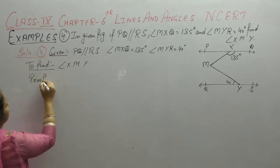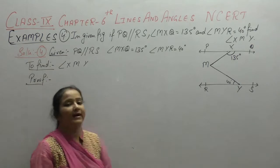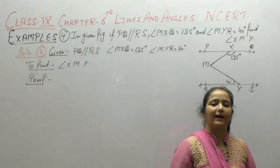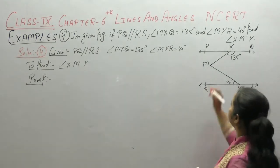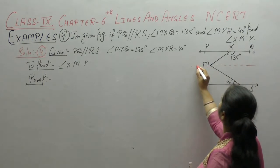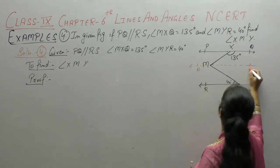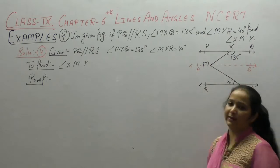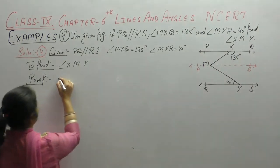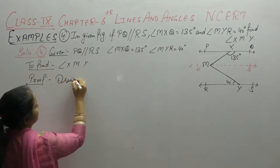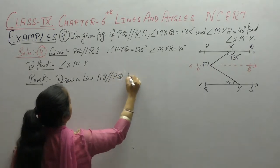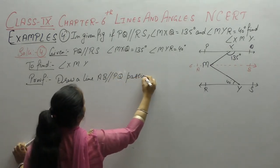Proof. Now, we have two parallel lines PQ and RS. We draw another line through point M, parallel to PQ.